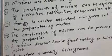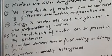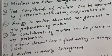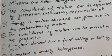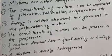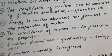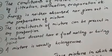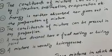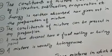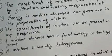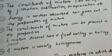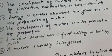Number four: the constituents of mixture can be present in any proportion — mixture mein koi fixed proportion nahi hota. Number five: a mixture doesn't have a fixed melting or boiling point — kisi bhi mixture ka melting or boiling point fix nahi hota. And last: a mixture is usually heterogeneous.